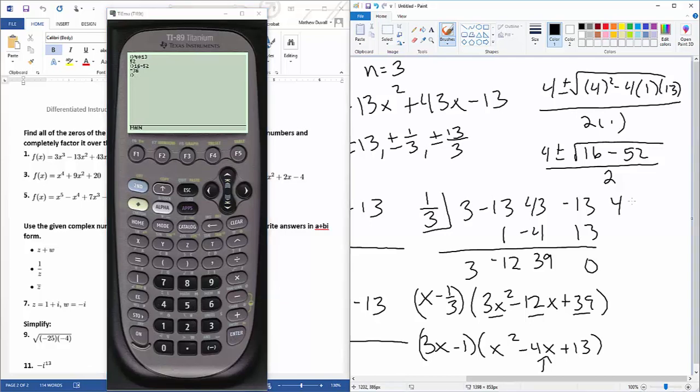So I get 4 plus or minus the square root of negative 36, all over 2. So that's 4 plus or minus 6i, which is 2 plus or minus 3i.